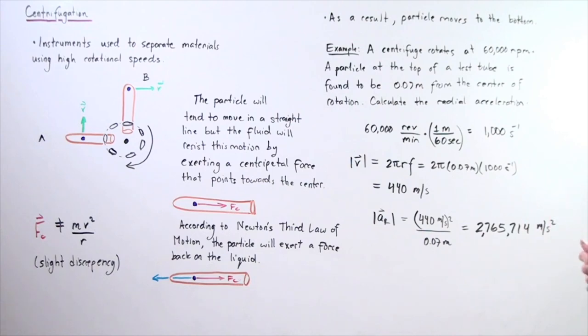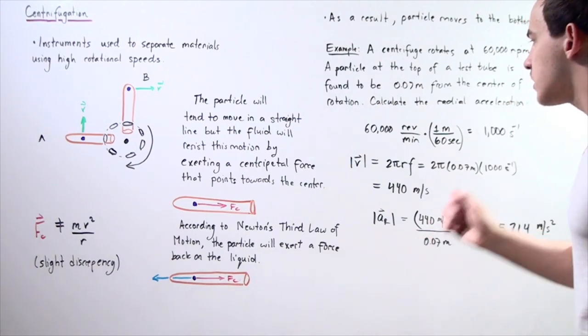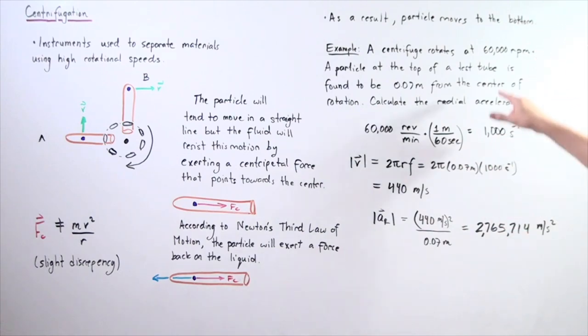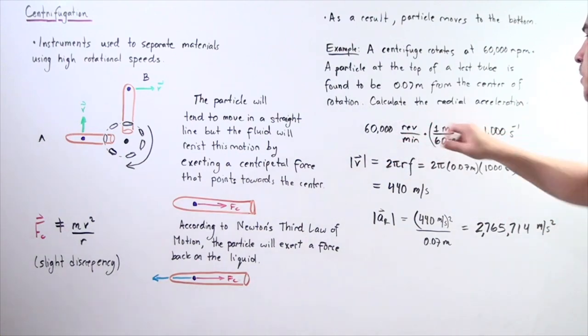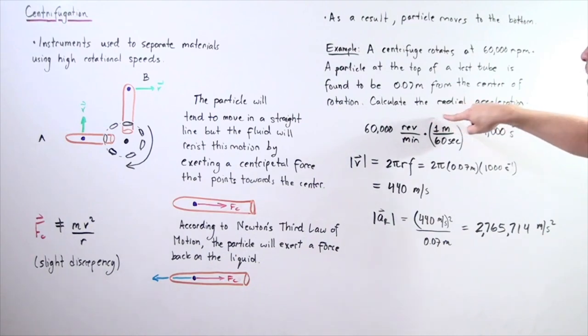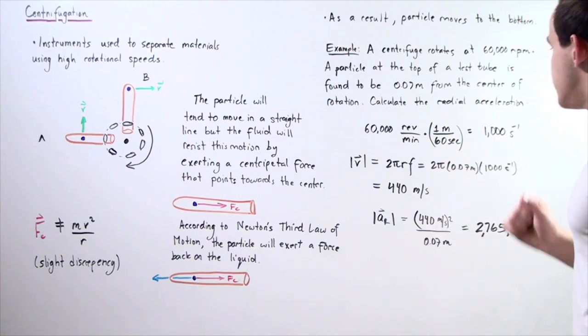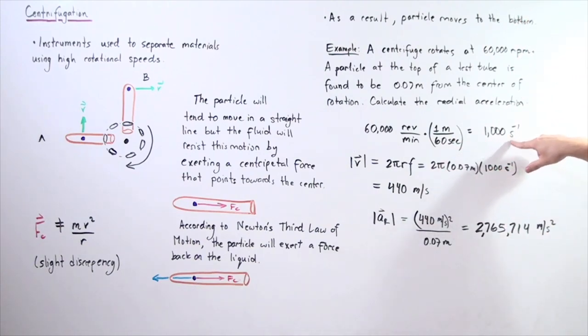We want to calculate the radial acceleration of our particle. First we must take this RPM value and convert it to revolutions per second to get the frequency. So, 60,000 revolutions per minute multiplied by 1 minute in 60 seconds. We cross out the minutes and we find that our frequency is 1000 seconds to the minus 1.